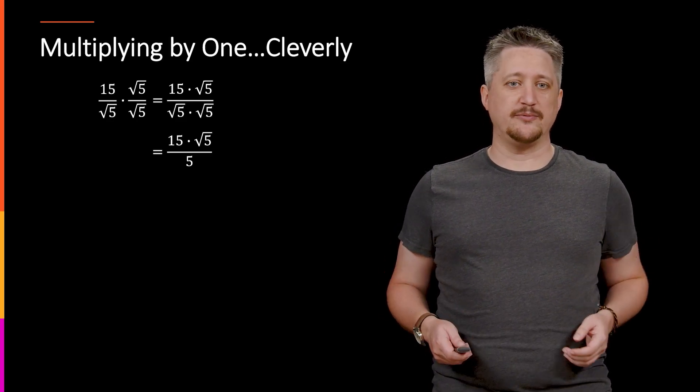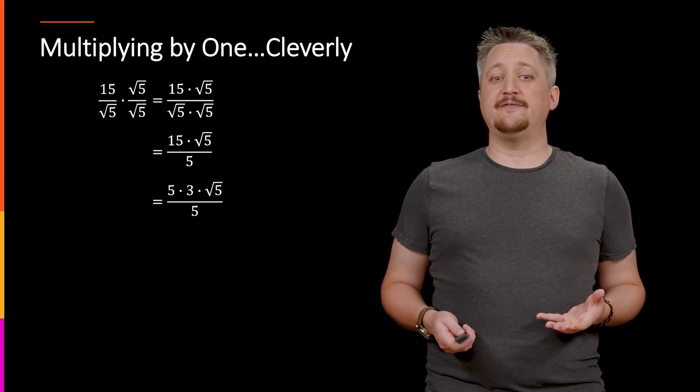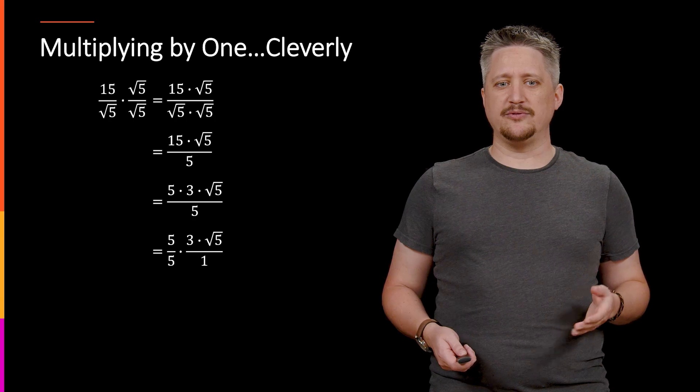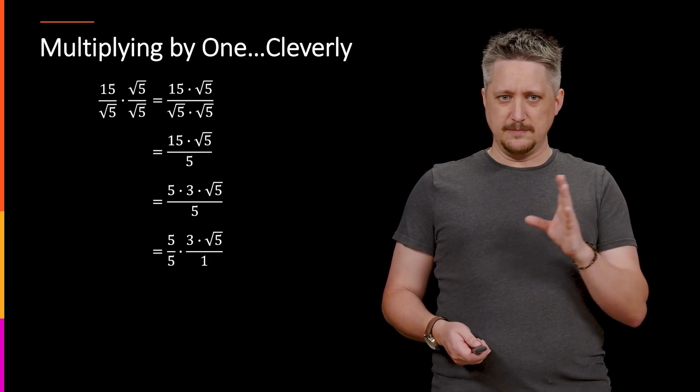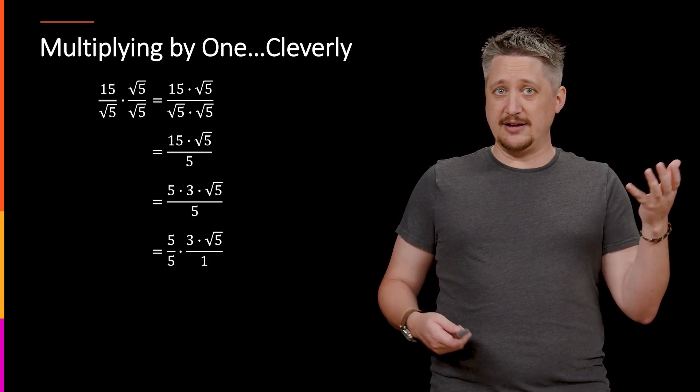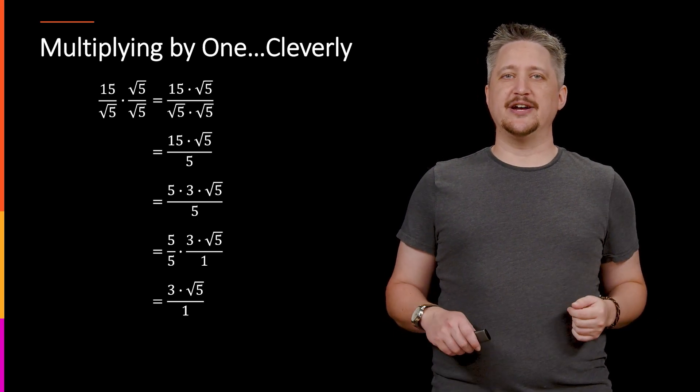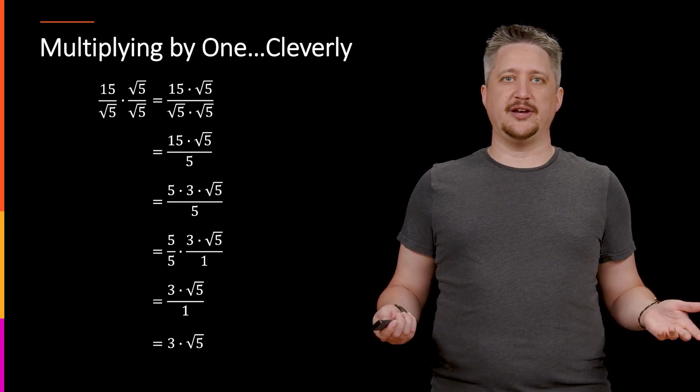Top stays how it is, 15 times root 5. Separate that 15, so it's 5 times 3. And then that allows us to cancel out those 5s in the front. So we can pull them out, so it's 5 over 5, which is just 1. That gets rid of that. Now we're down to 3 times root 5 over 1 or just 3 times root 5.